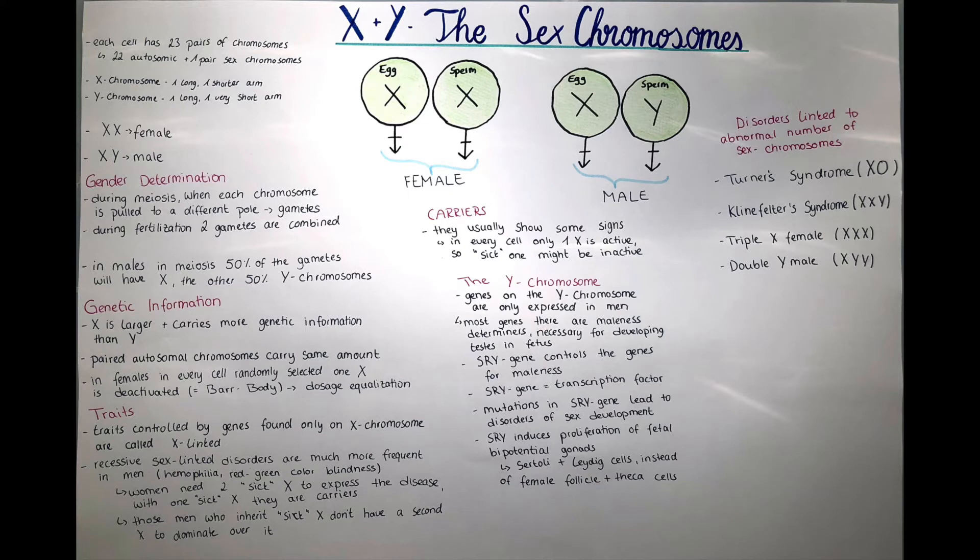In females, in every cell, it's randomly selected which one of the X chromosomes will be deactivated. So it will be seen as a Barr body. This means that in females, in every cell, just one of the X chromosomes is activated, which is for the purpose of dosage equalization, so that in females there's not more active genes than in males.